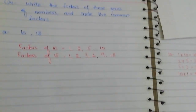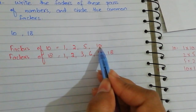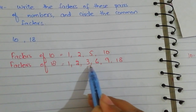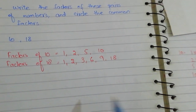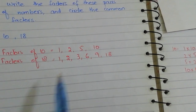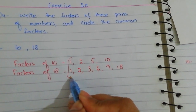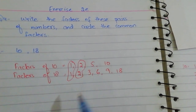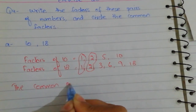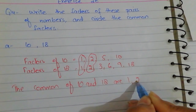So the factors of 10 are 1, 2, 5, and 10. The factors of 18 are 1, 2, 3, 6, 9, and 18. Now look at the factors which are common in both numbers — that is 1 and 2. So the common factors of 10 and 18 are 1 and 2.